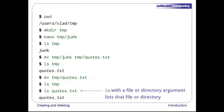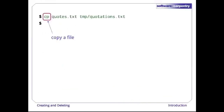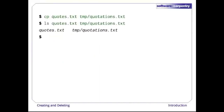Notice, by the way, that ls with a file name or directory name as an argument lists only that file or directory. The cp command works very much like mv, except it copies a file instead of moving it. We can check that it did the right thing using ls with two paths as arguments. Like many other Unix commands, ls can process up to thousands of paths at once.